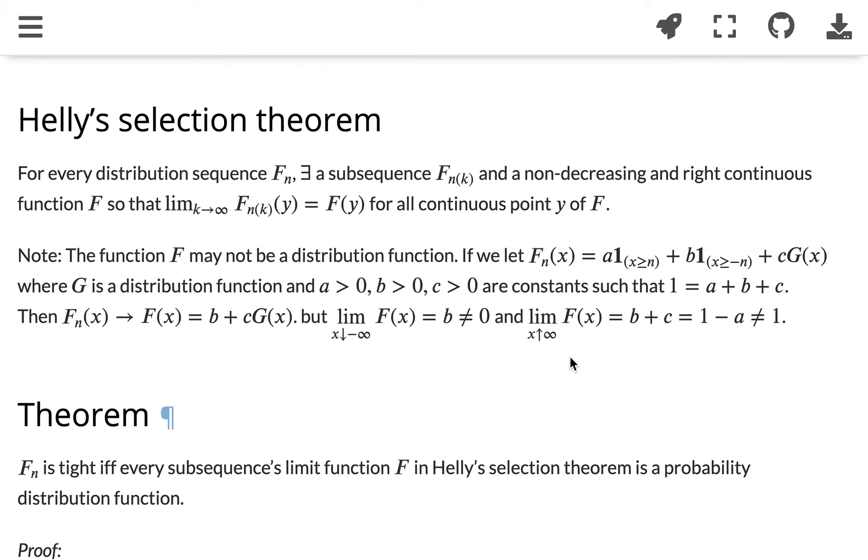But Helly's Selection Theorem is telling us that we can always find a subsequence from any sequence fn that will converge to a non-decreasing right continuous function. And that convergence is for all points, all continuous points y of f. So it's considering all the continuous points of f.